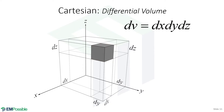We end with the differential volume. Since we live in a three-dimensional world, there's not really a vector differential volume — if we were doing four-dimensional problems there would be a direction associated with it, but we can't picture that. So for us, differential volume is always a scalar quantity. The volume of that little cube is dx times dy times dz, and we call that dv, our differential volume.